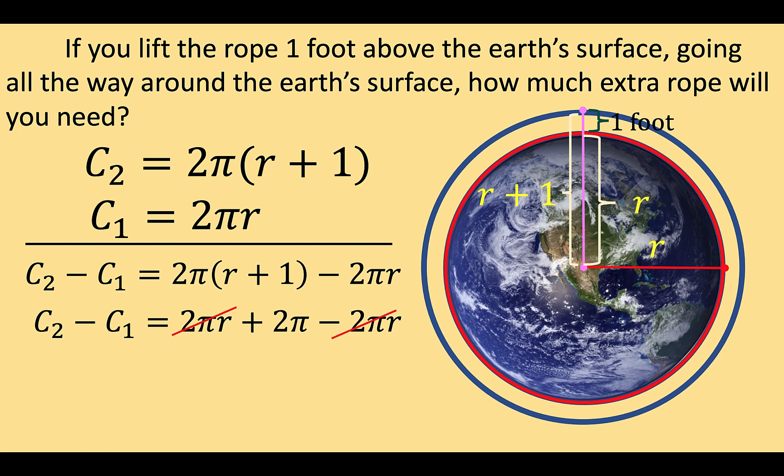We can cancel out 2πR minus 2πR. And the right side becomes only 2π. So C₂ minus C₁, which represents the length of the extra rope, would now be equal to 2π, which is approximately equal to 6.28 feet.